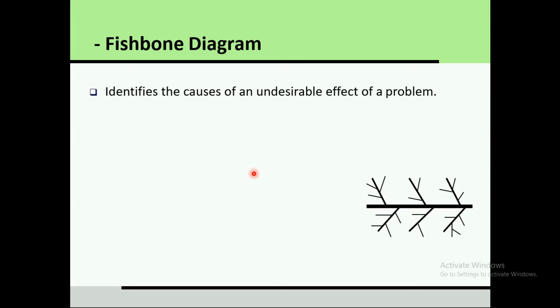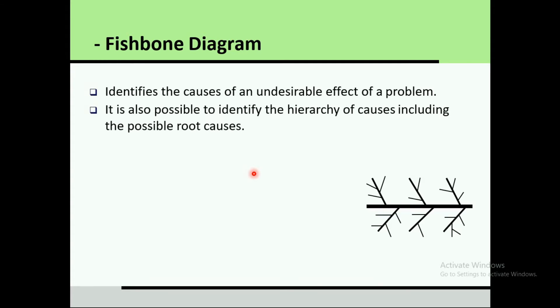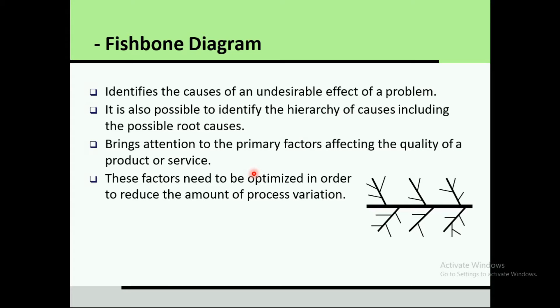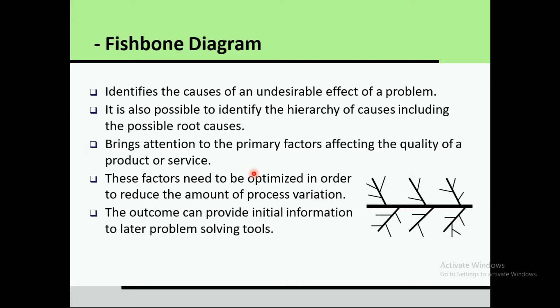Even for problems you never expected, this diagram helps identify their cause. It is also possible to identify the hierarchy of causes, including the possible root causes, tracing back until reaching the ultimate root cause of the problem. This brings attention to the primary factors affecting the quality of the product or service, which need to be optimized to reduce process variation.